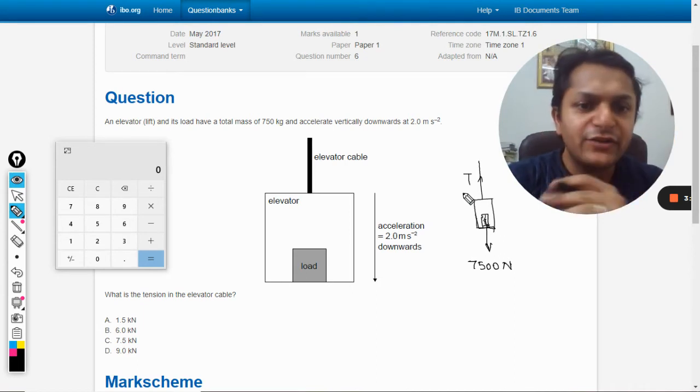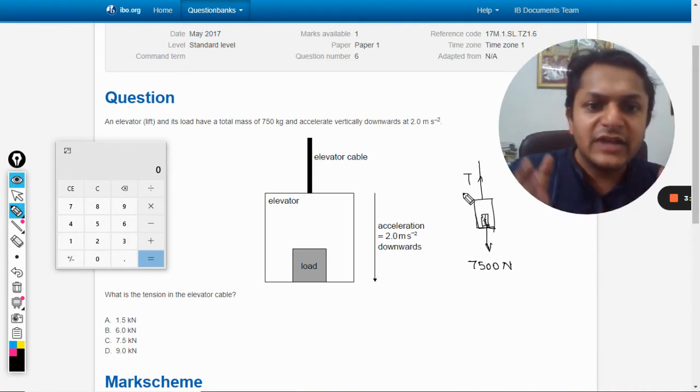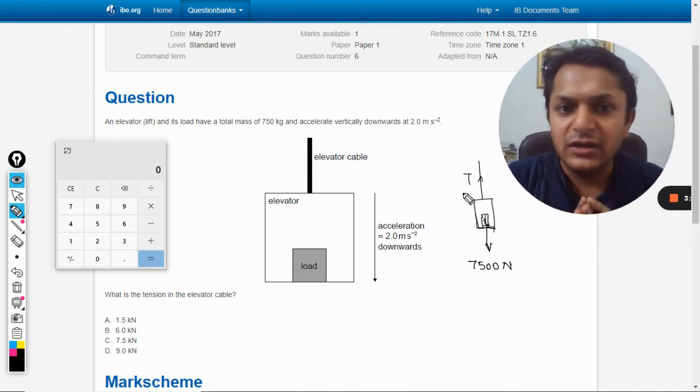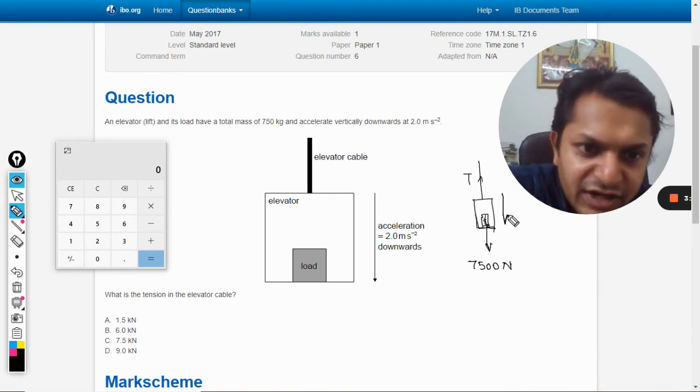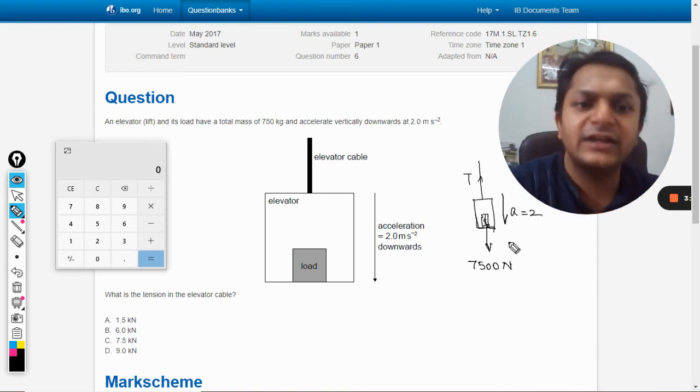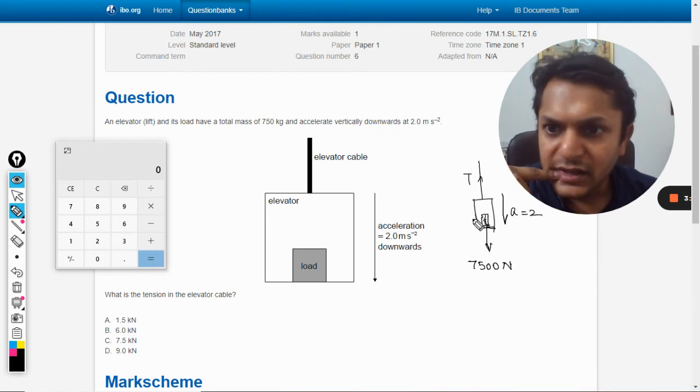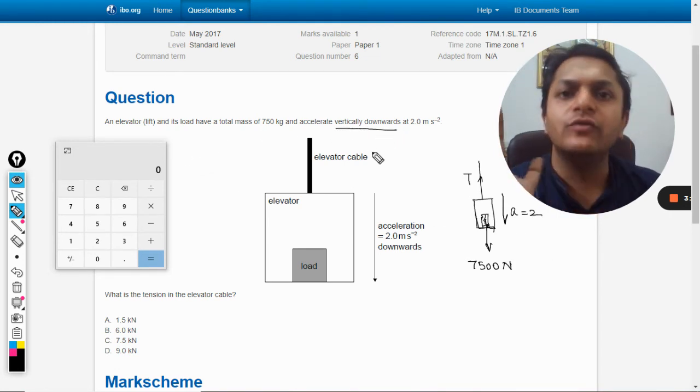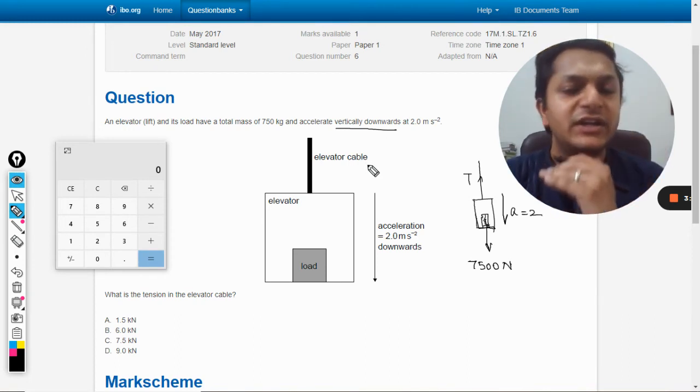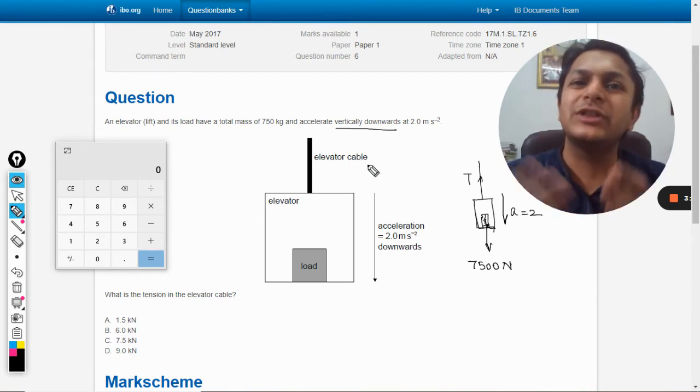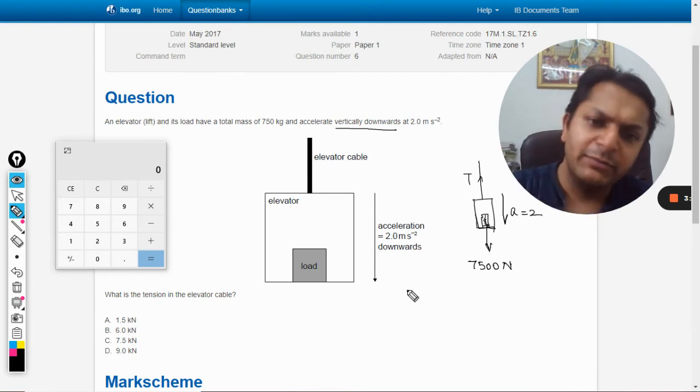What is the net force acting on the weight? It will be 7500 minus T, and acceleration, the net acceleration, is also given as 2. It is moving vertically downward, which means weight is more than tension.